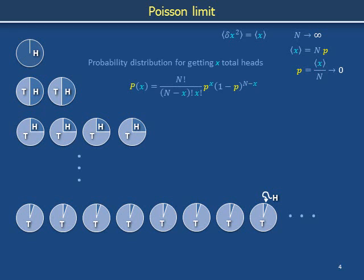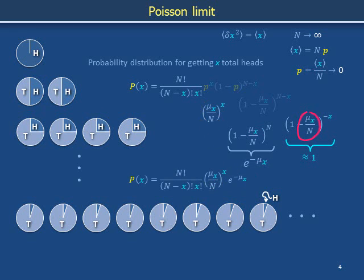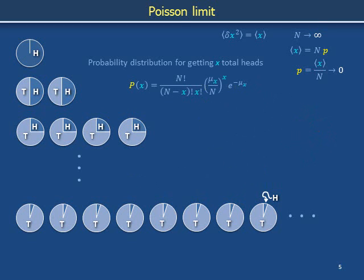We explicitly substitute into this distribution the ratio that defines p, replacing the probabilities with the average of x — denoted μ_x — divided by N. The quantity 1 minus μ_x over N is taken to the power N minus x. We break this power into a factor taken to the power N and another taken to the power minus x. In the parentheses to the right, N in the denominator grows arbitrarily large while μ_x in the numerator is held constant, so the quantity approximates 1. The remaining factor becomes e to the minus μ_x. We consolidate these factors alongside the combinatoric factor, which we will now simplify.